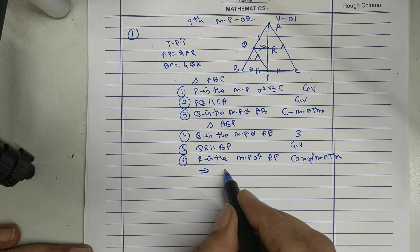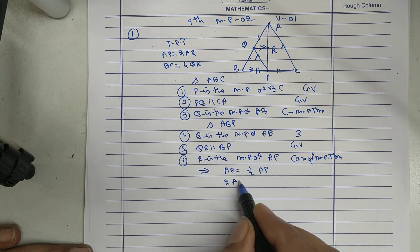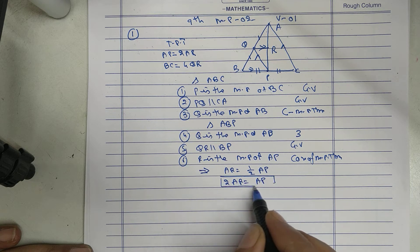That implies that AR is half of AP. Twice AR is AP. First part proved.